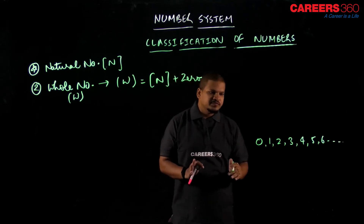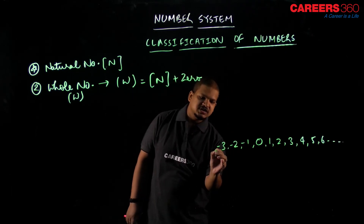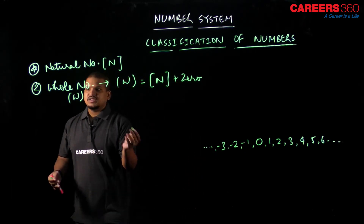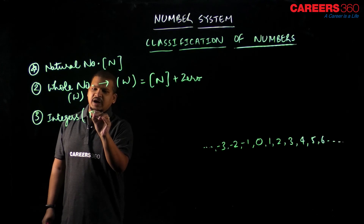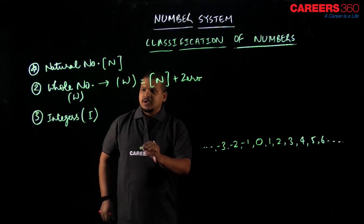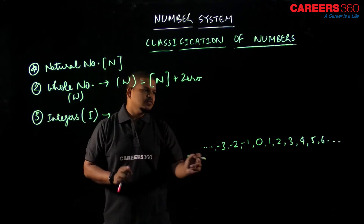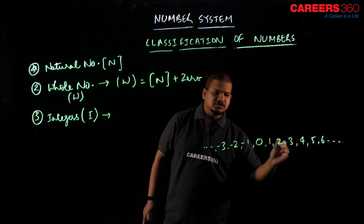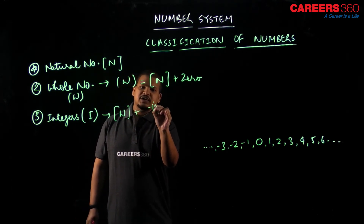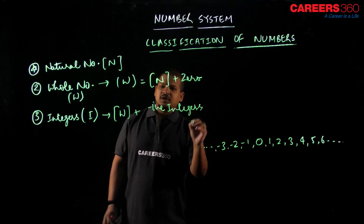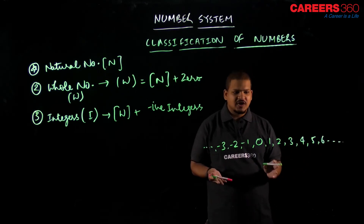Now if I include negative numbers also — minus 1, minus 2, minus 3, and so on going up to negative infinity — this third type of number will be nothing but integers, represented by I. Integers are defined as whole numbers W plus negative integers.